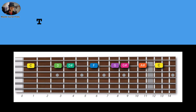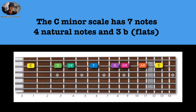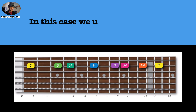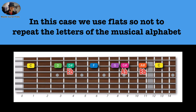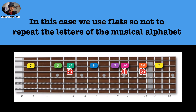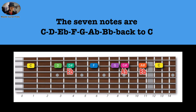The C minor scale has seven notes — four natural notes and three flat notes. In this case we use flats, so as not to repeat the letters of the musical alphabet. The seven notes are C, D, E-flat, F, G, A-flat, B-flat, back to C.